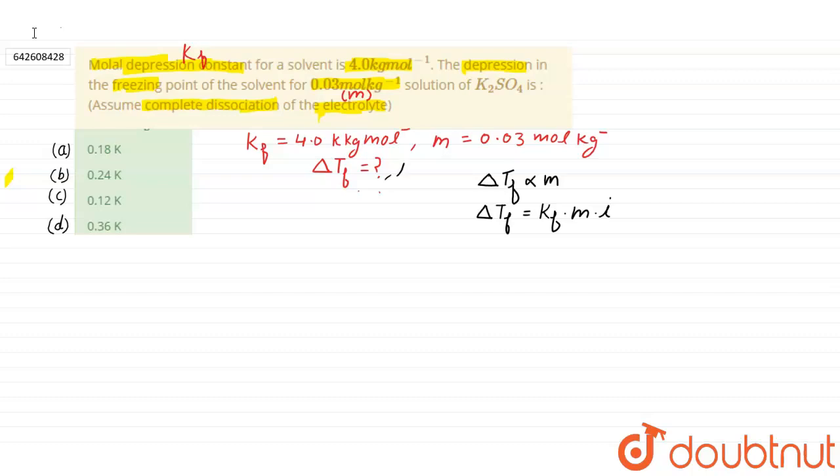It means we have to find one another thing, van't Hoff factor. To find out van't Hoff factor, we take K2SO4 because in the numerical, it is given that K2SO4 is completely...